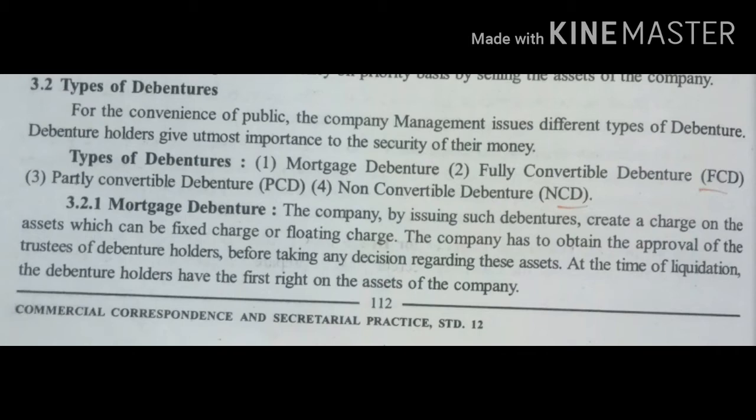When a fixed charge is created, the company cannot dispose of the mortgaged assets without the permission of the trustee — that is, the trustees formed by the debenture holders. When a floating charge is created, the company can use its assets in any way it likes. But when the company makes default in paying interest or any installment, the floating charge becomes a fixed charge.